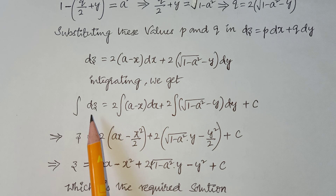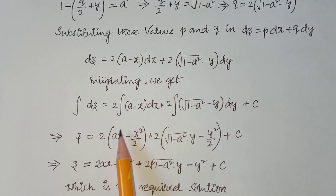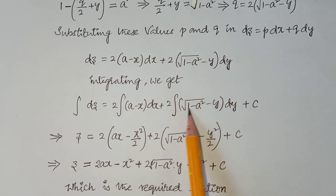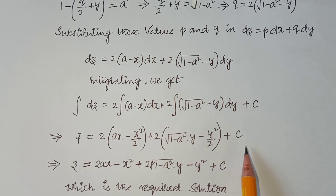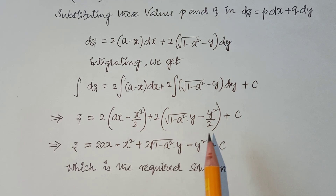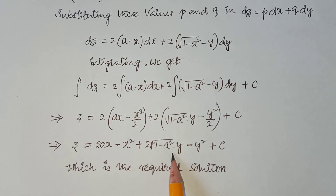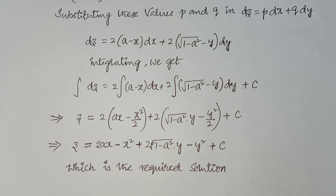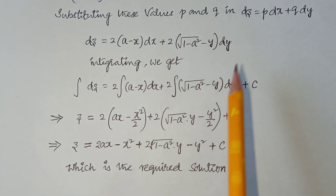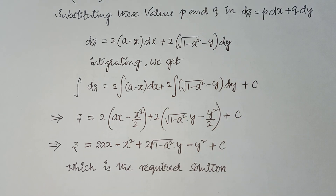Integrating: z = 2(ax − x²/2) + 2(√(1 − a²) · y − y²/2) + c. After simplification: z = 2ax − x² + 2√(1 − a²) · y − y² + c, which is the required solution. This is how we solve nonlinear equations of type 3: separate them, equate to a constant, substitute into dz = p dx + q dy, and integrate to get the required solution.